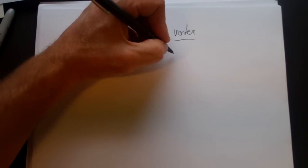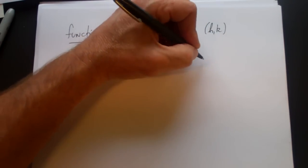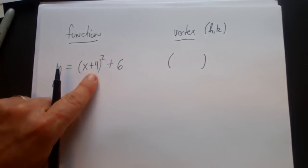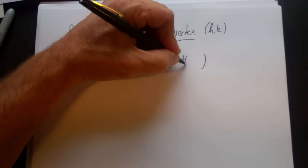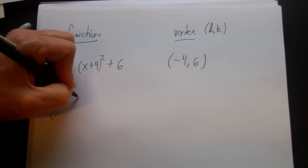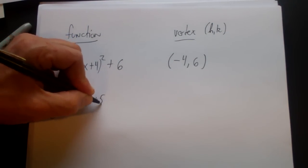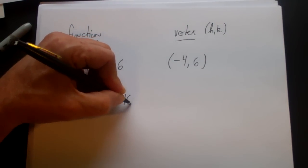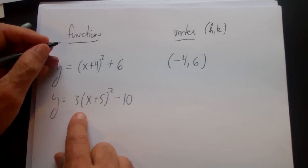Let's look at a function and find its vertex. For y is equal to x plus four squared plus six, the vertex is always (h, k). The h is four but it changes signs, so the vertex is negative four and positive six. Let's do another one: y is equal to three times x plus five squared minus ten. The three outside doesn't affect the vertex at all.